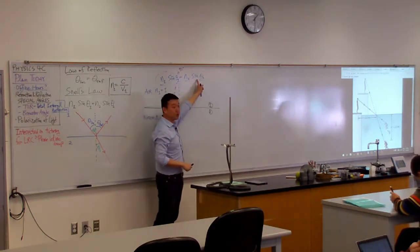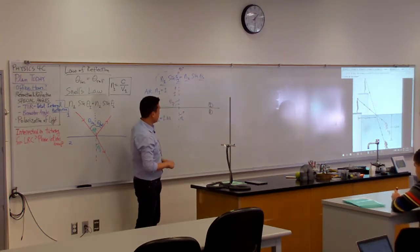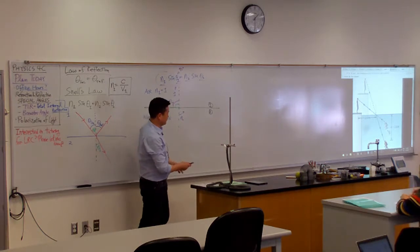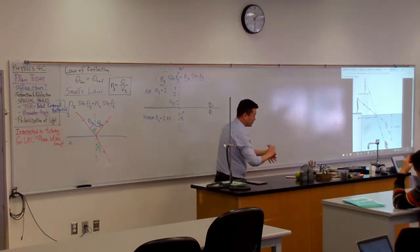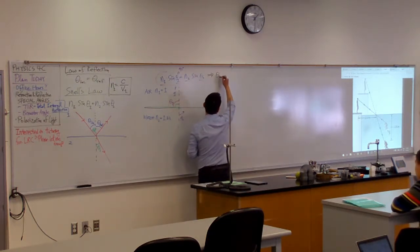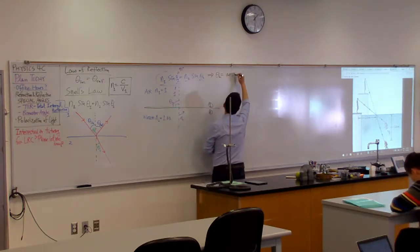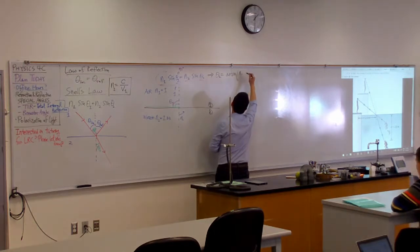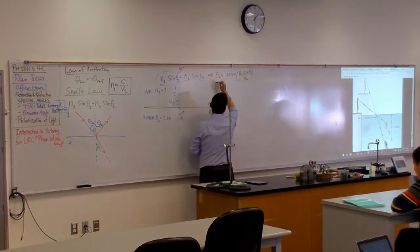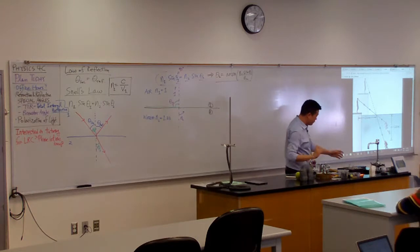This is bigger than 1, which means this has to be smaller than 1, so that the product can equal 1, right? And let me just do, if you work out the expression algebraically, what that would be is theta 2 is arc sine of n1 sine theta 1 over n2. Did I do the algebra correctly? Yes.